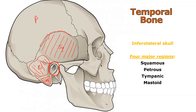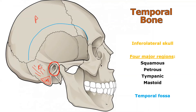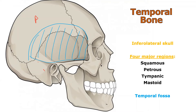So the four major regions of the temporal bone are: squamous, petrous, tympanic, and mastoid. The temporal fossa is a structure that drives people insane. It incorporates the squamous region but also the sphenoid bone, part of the frontal bone, and the parietal bone. This is called the temporal fossa, and big chewing muscles like the temporalis fit in that spot, giving you powerful bite force.